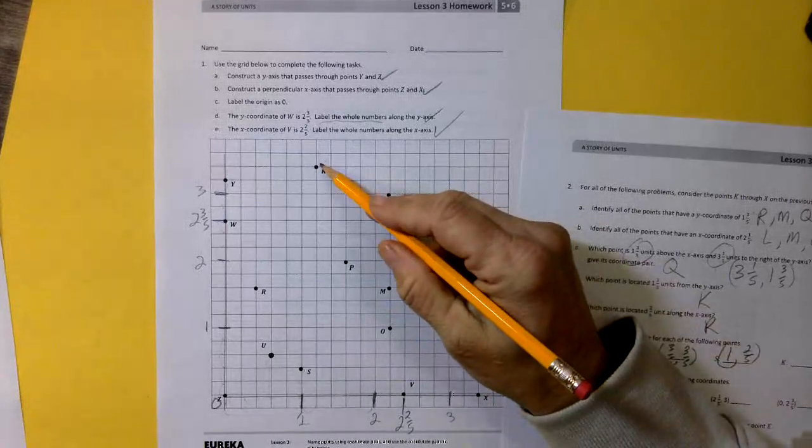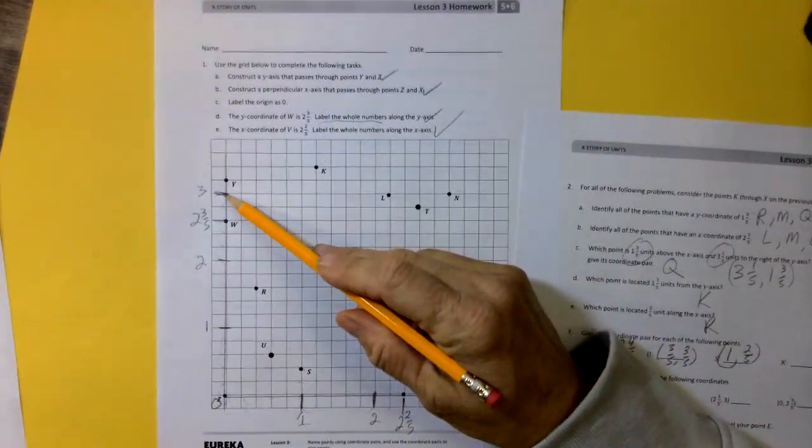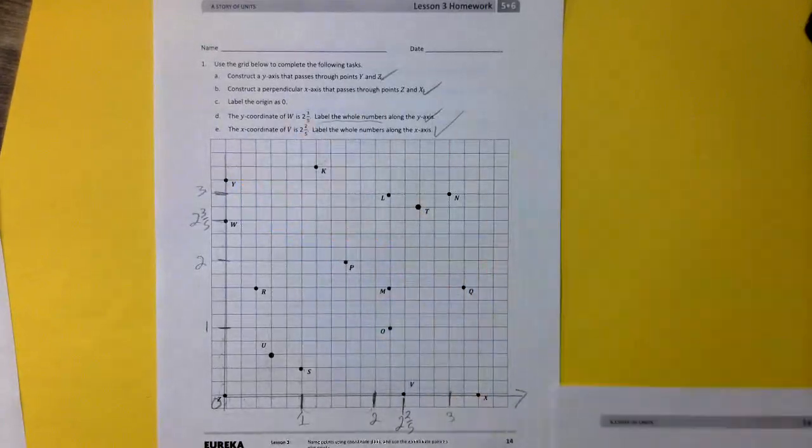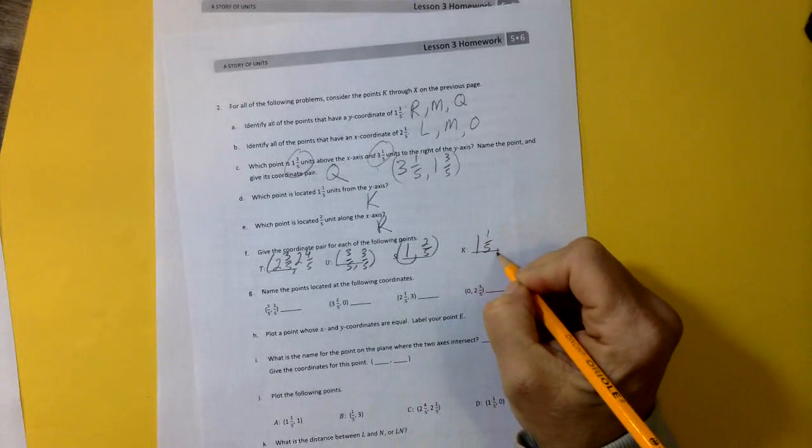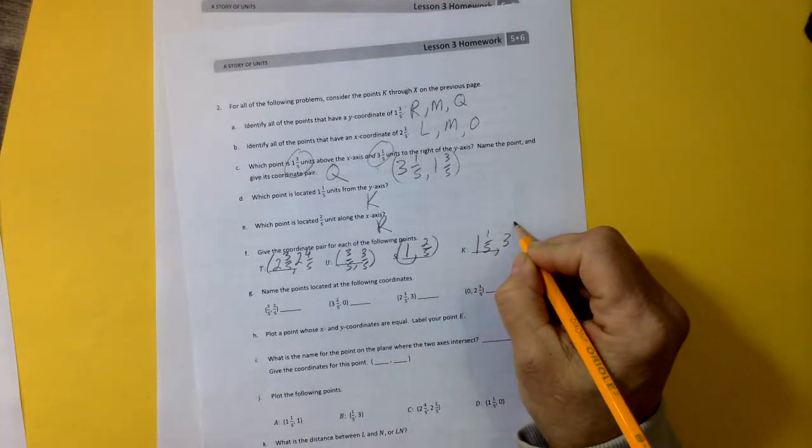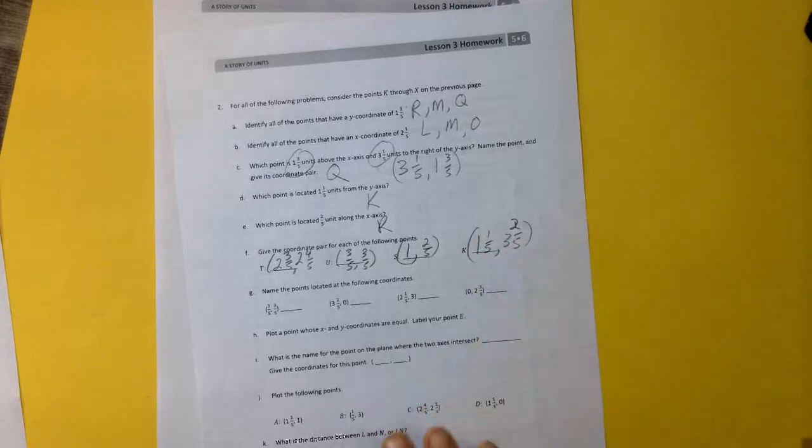K. We know K is way up here. We worked at that earlier. So 1 and 1 fifth and then 3 and 1 fifth, 2 fifths. So 1 and 1 fifth and 3 and 2 fifths. Right? Okay, great.